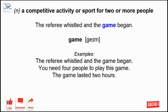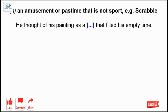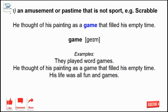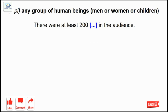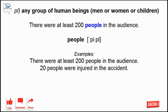Game: a competitive activity or sport for two or more people. Game: an amusement or pastime that is not sport, for example Scrabble. People: any group of human beings; men or women or children.